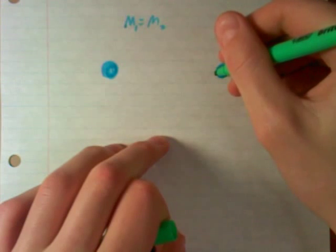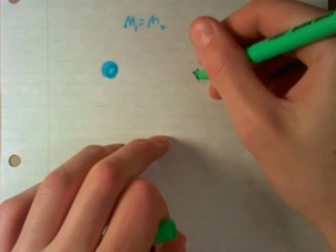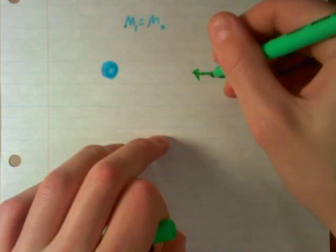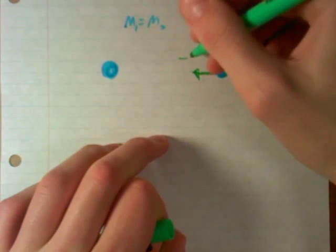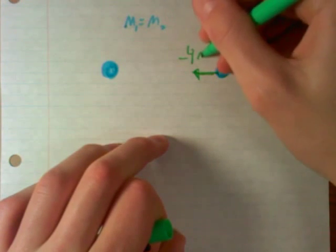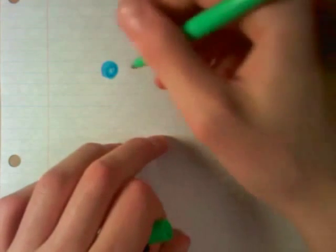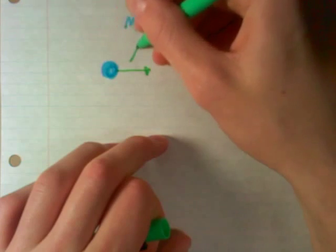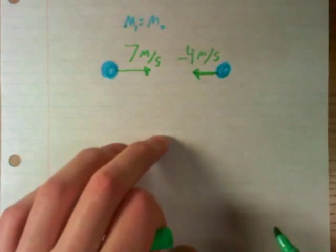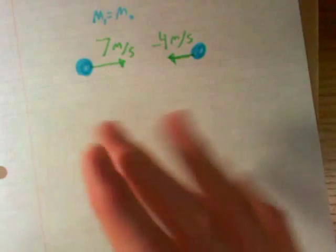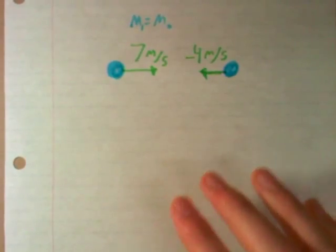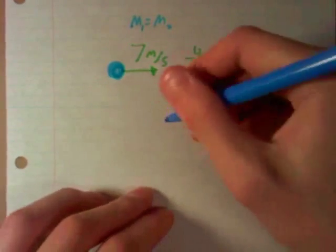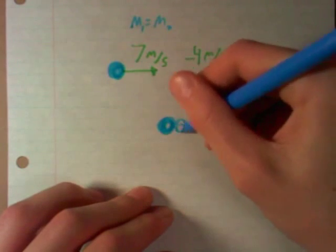Now what we're trying to figure out is the velocity of them. Let's say this ball is moving at a velocity of negative four meters per second, and this one's moving this direction with a velocity of seven meters per second. And we want to find the velocity of them both after they hit.